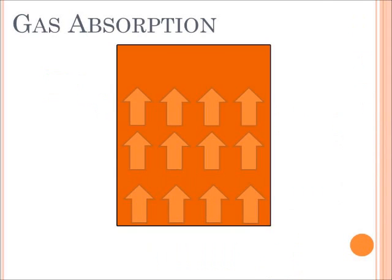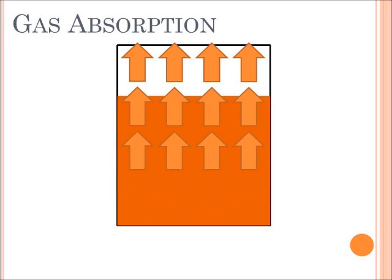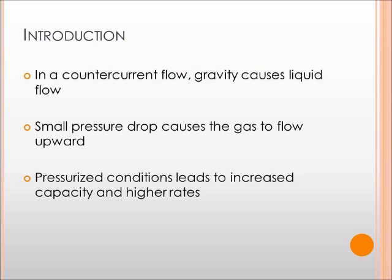As you recall, the mechanism happening inside a gas absorber: in a counter-current flow, the pull of gravity causes the liquid motion, while the differential upward pressure, buoyancy and density of the gas cause it to move in the opposite direction.